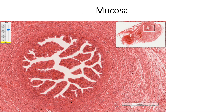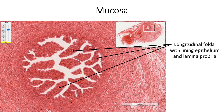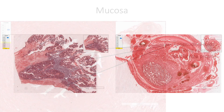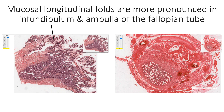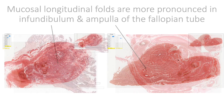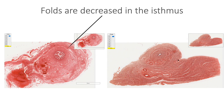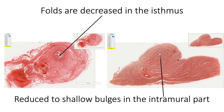The mucosa shows longitudinal folds with lining epithelium and lamina propria. The mucosal longitudinal folds are more pronounced in the infundibulum and ampulla. The folds are decreased in the isthmus region and are reduced to just shallow bulges in the intramural part.